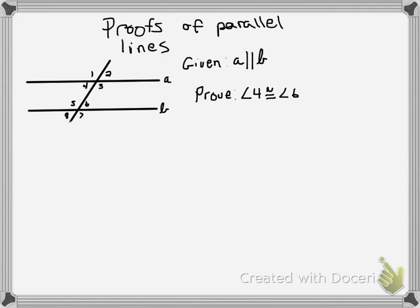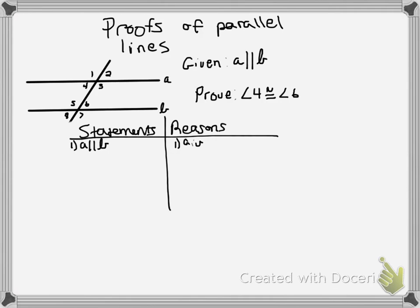We always start - this one we're going to do a two-column proof, so on one side we have our statements, and on the other side we have our reasons. The first thing we always start off with is our given. We know that A is congruent to B, that's what we're given, so our reason is given.